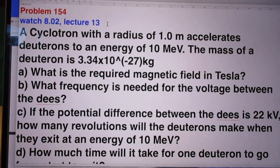A cyclotron with a radius of 1.0 meters accelerates deuterons to an energy of 10 MeV. The mass of a deuteron is 3.34 times 10 to the minus 27 kilograms.